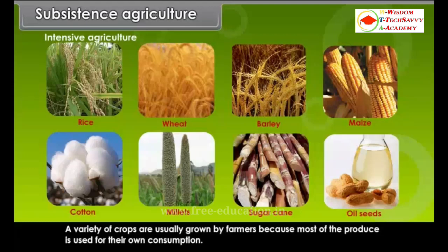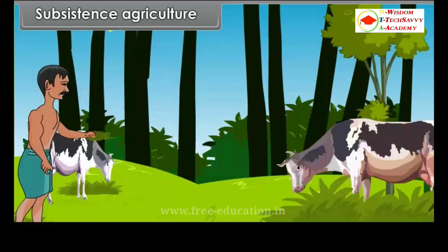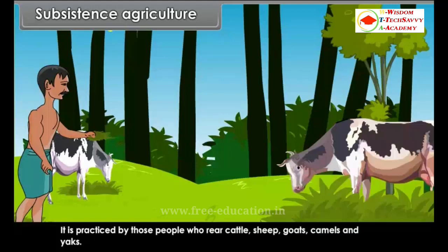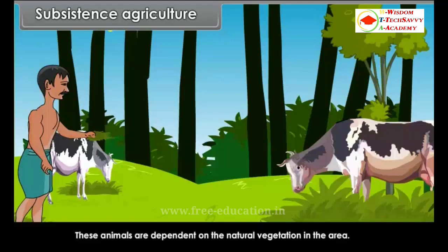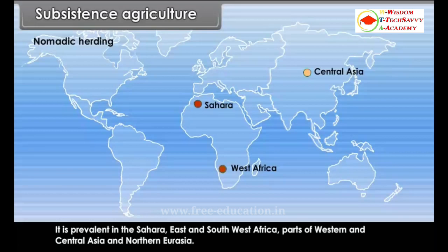A variety of crops are usually grown by farmers because most of the produce is used for their own consumption. Primitive subsistence agriculture includes shifting cultivation and nomadic herding. Nomadic herding is practiced by those people who rear cattle, sheep, goats, camels and yaks. These animals are dependent on the natural vegetation in the area. It is prevalent in the Sahara, East and Southwest Africa, parts of Western and Central Asia and Northern Eurasia.